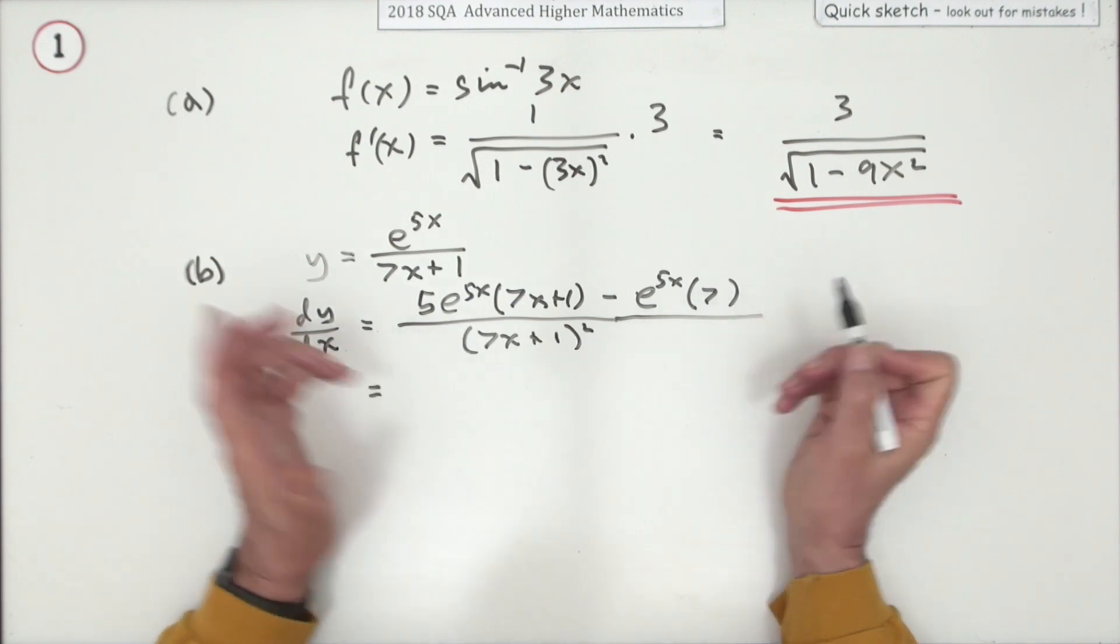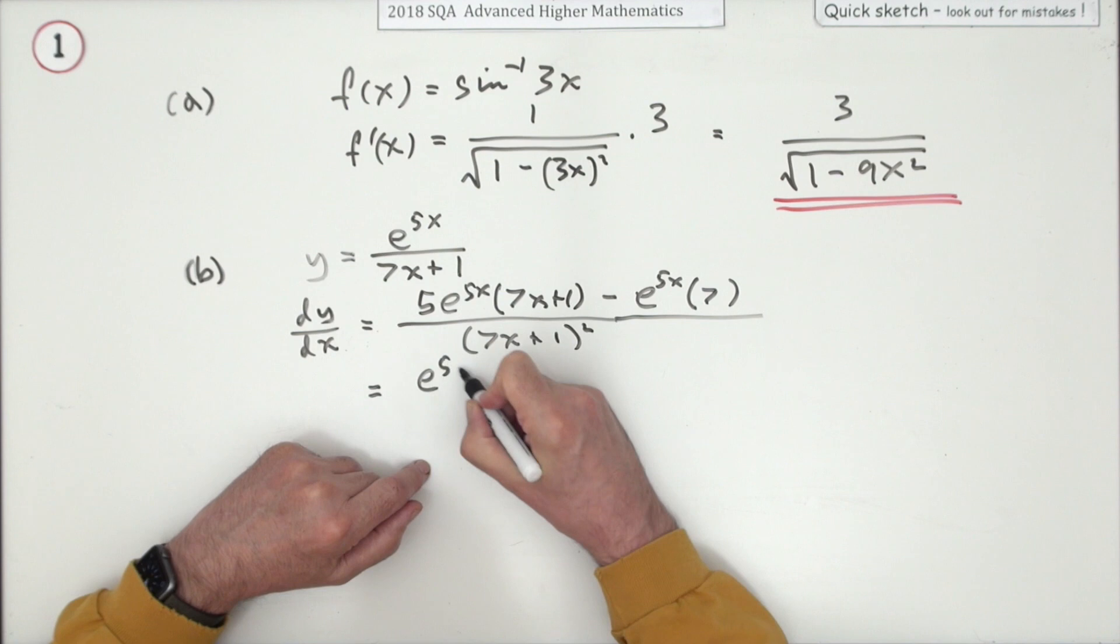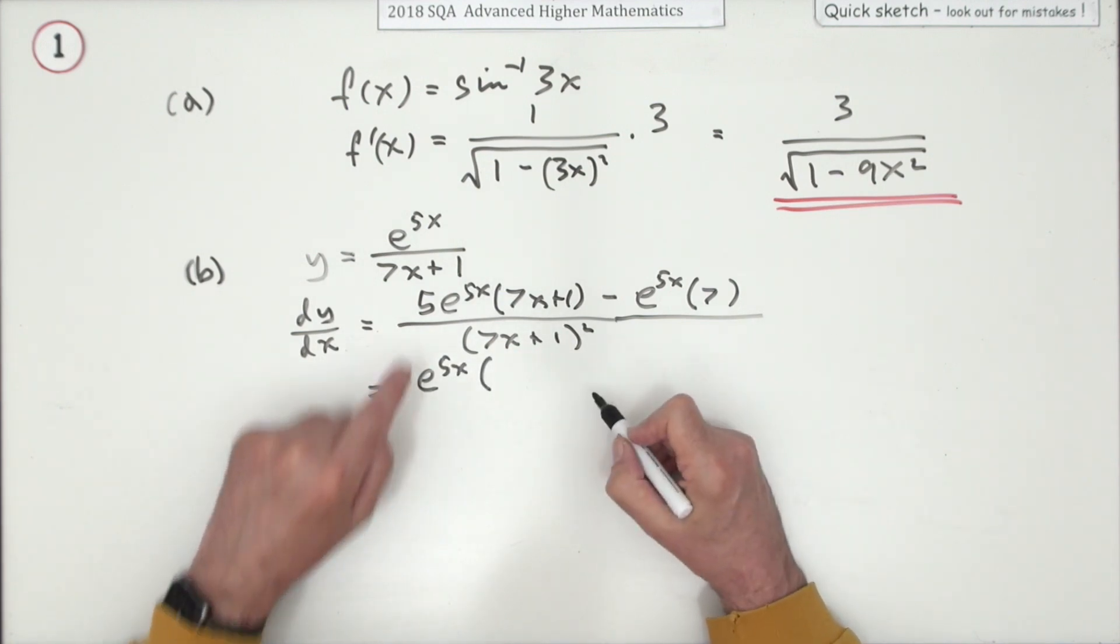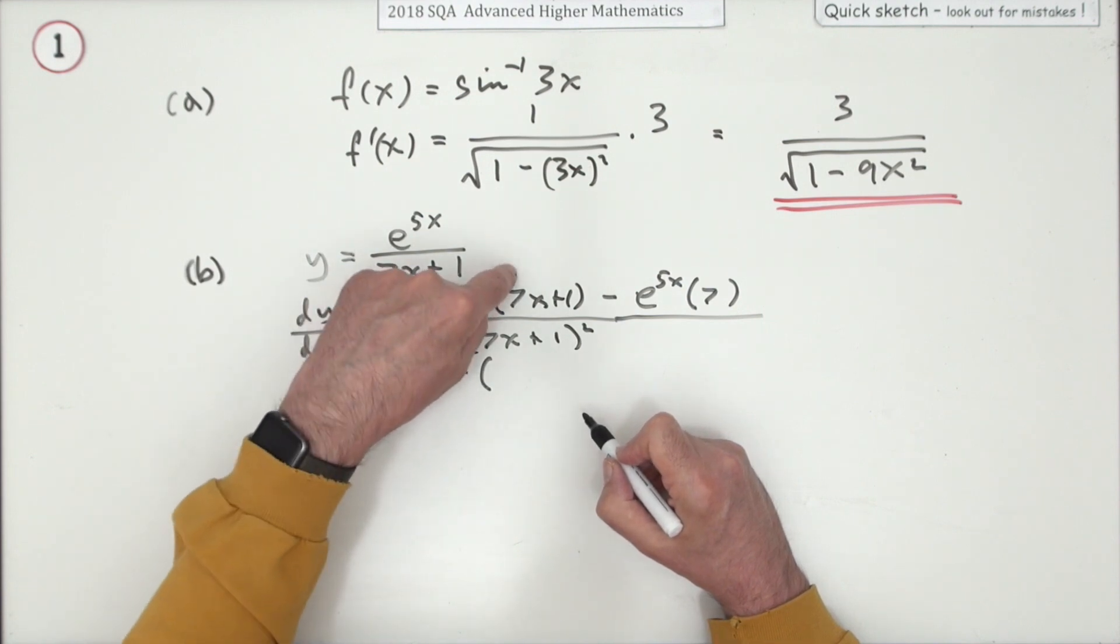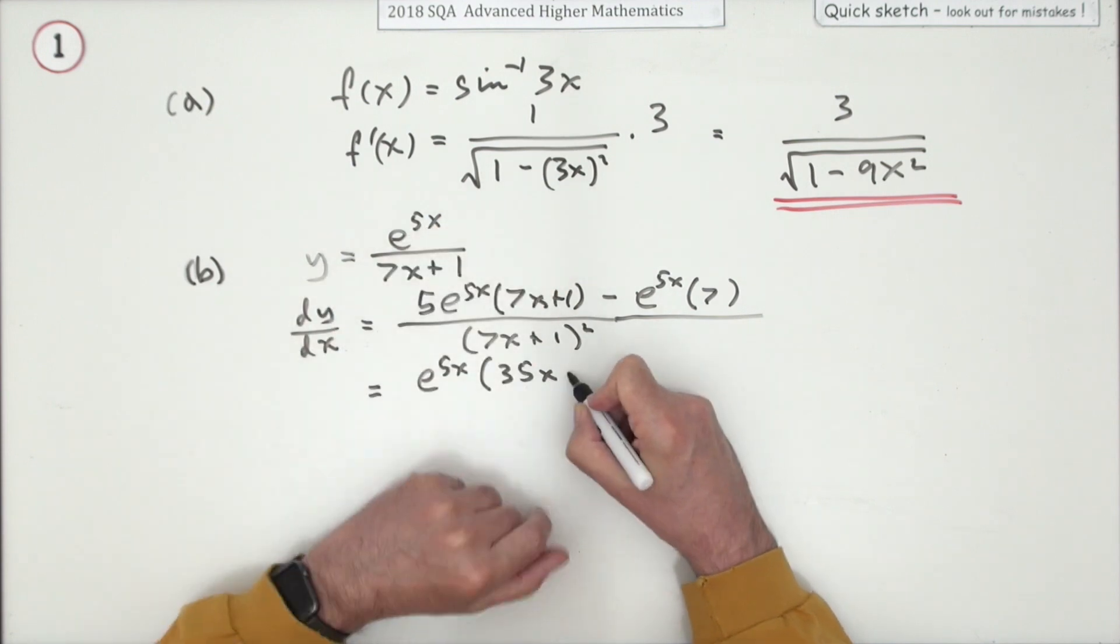Now what can you do with it? Well there's an e^(5x), and that's all they've got in common really. So you've got e^(5x), if you take that out, you're still left with 35x plus 1, I meant plus 5.